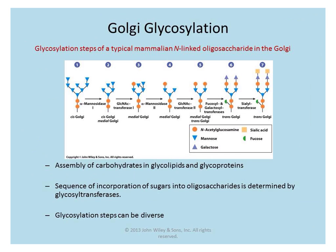The Golgi also has glycosylation, and there are specific enzymes responsible for that. Certain sugar residues added in the rough ER are removed and then modified so that additional sugar residues are added in a particular fashion. This shows one example of glycosylation steps that could occur to modify an N-linked oligosaccharide that was added in the rough ER, and then this protein could be shipped to the cell surface.